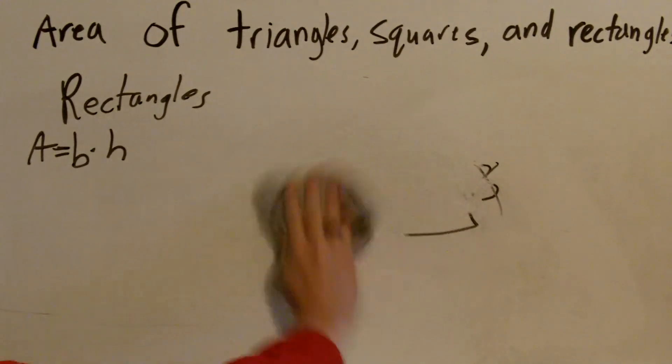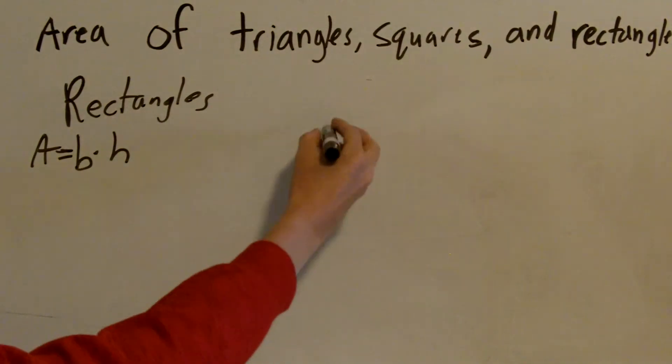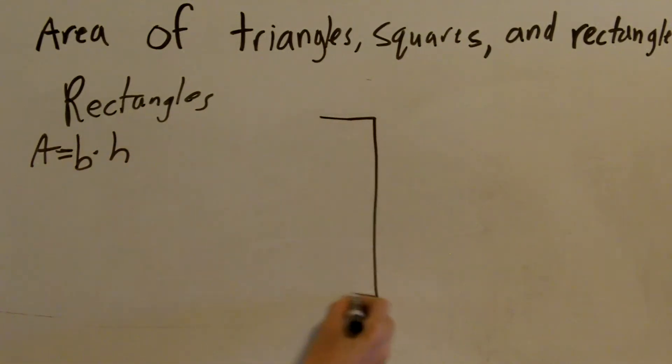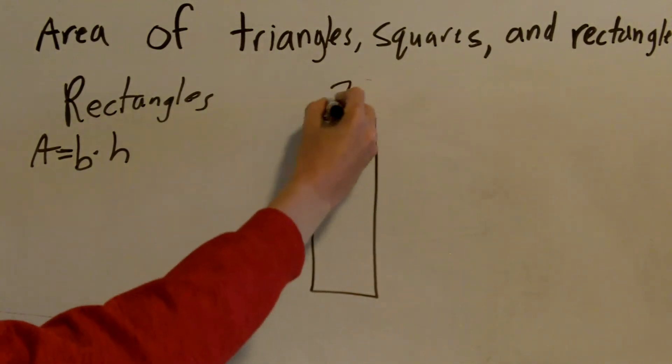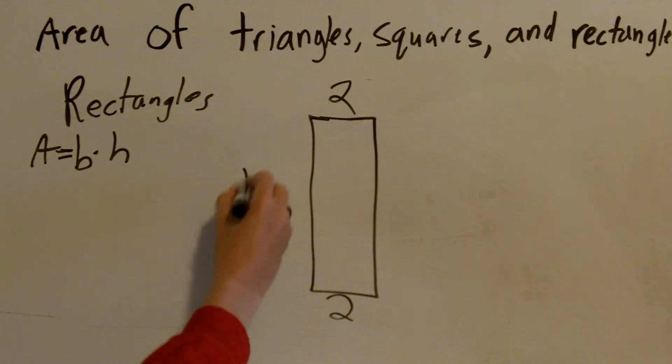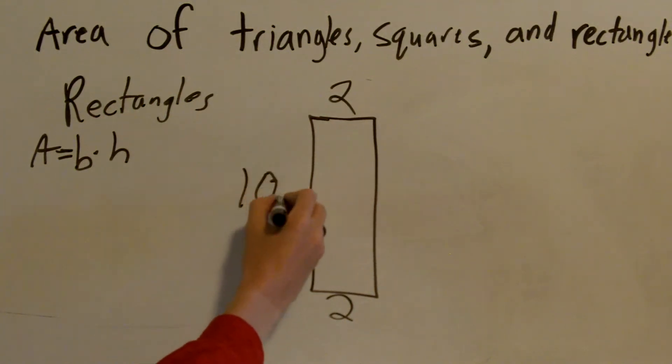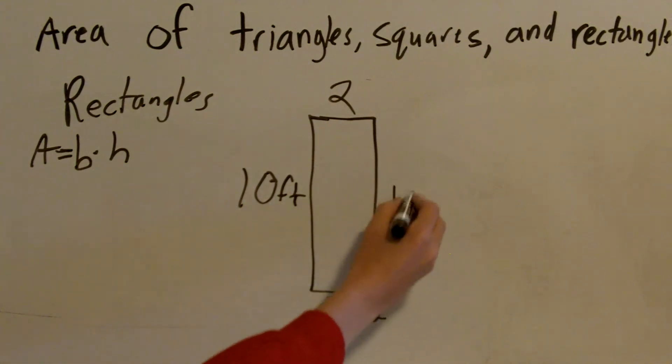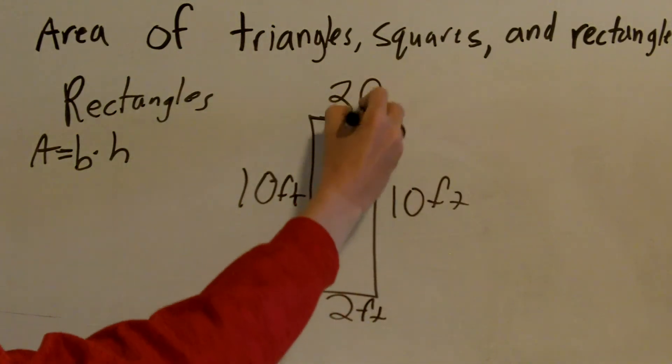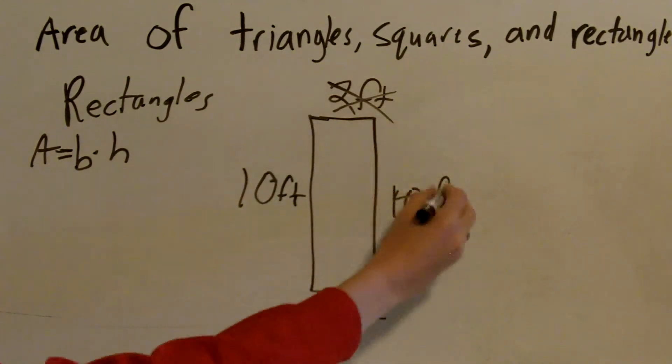So this is your last example. We have a rectangle that looks like this. 2 there, 2 there, 10 there. We'll say this is in feet. So I'm going to cross out the ones I don't need.